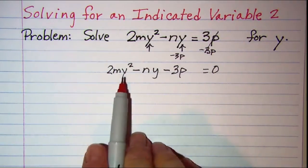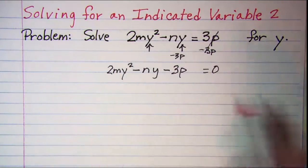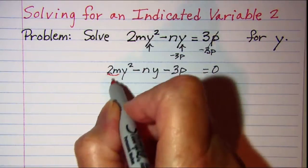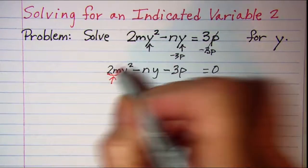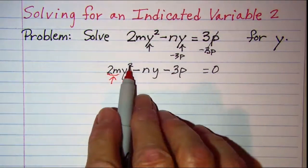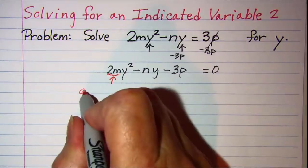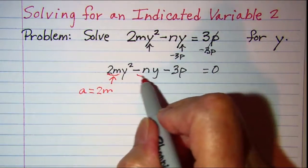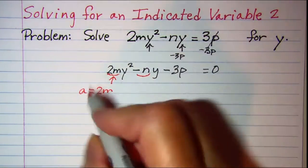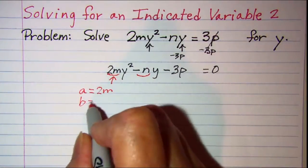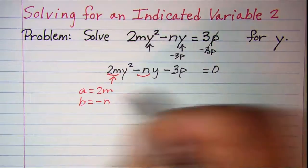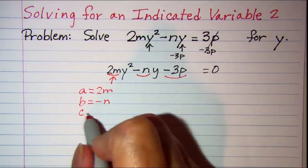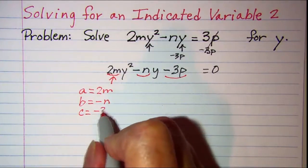We already noticed that this was a quadratic. We now need to figure out what the a is. The a is the coefficient of y squared so I'll write a is equal to 2m. The b is the coefficient of y so b is equal to negative n. And the c is the constant term so c is negative 3p.